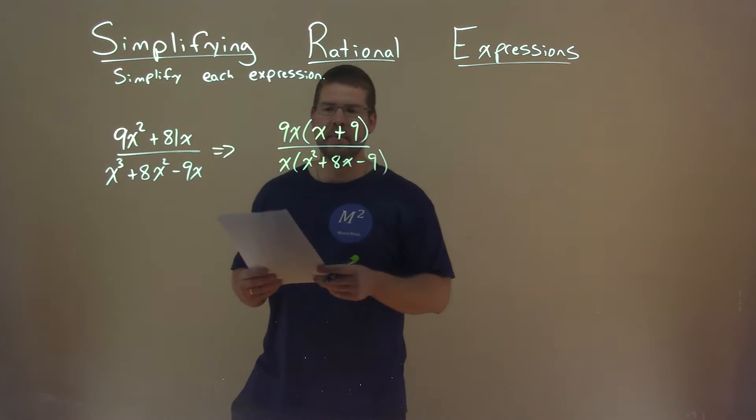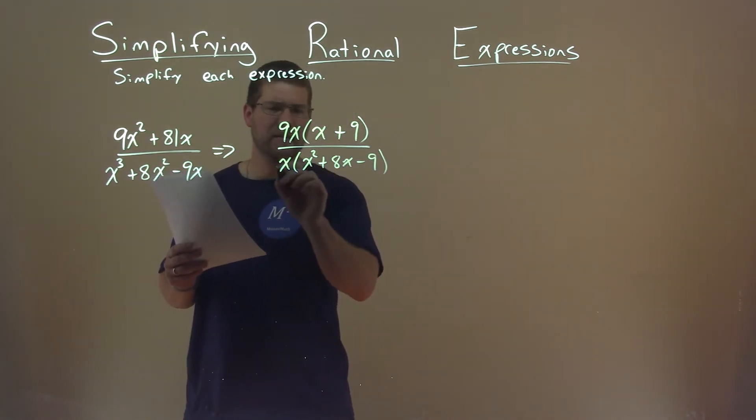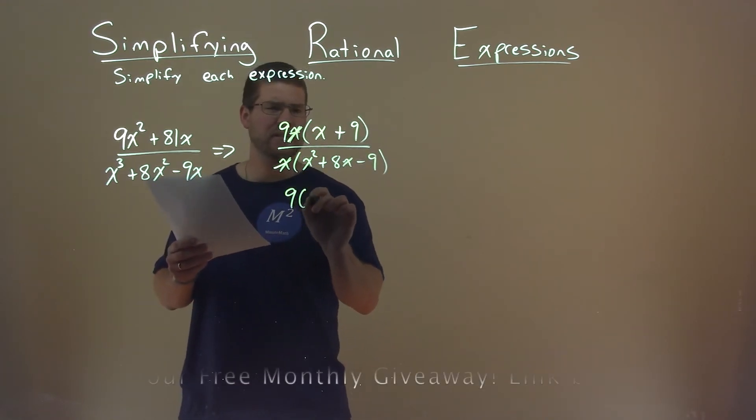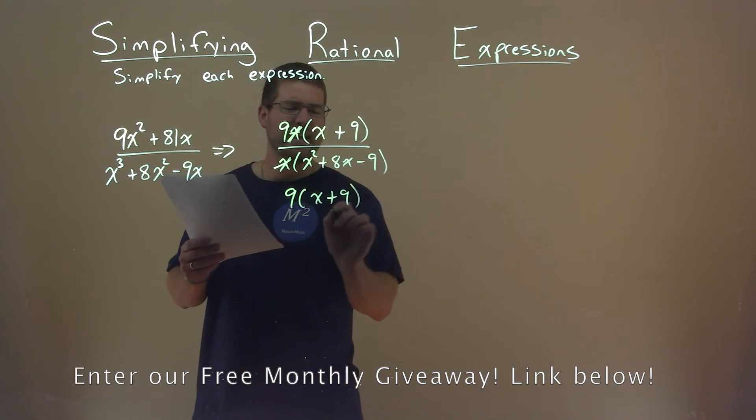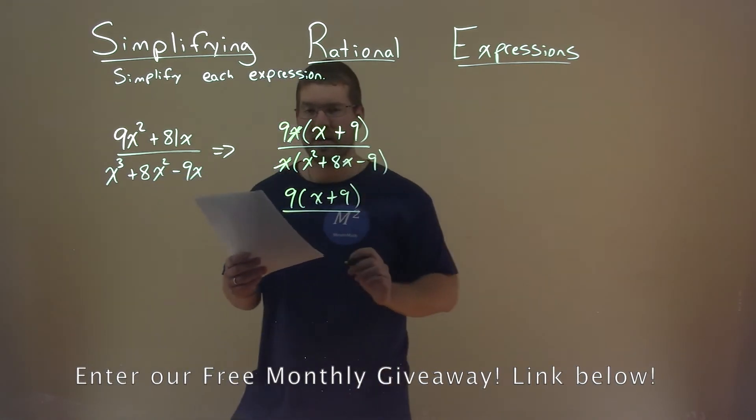Alright, well quickly, just because we can, I can see these x's cancel right there. There we go, canceled out. So the numerator I'm just going to bring down: 9 times x plus 9. Nothing else really to simplify there.